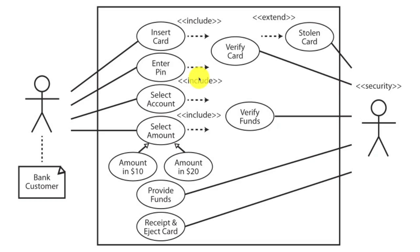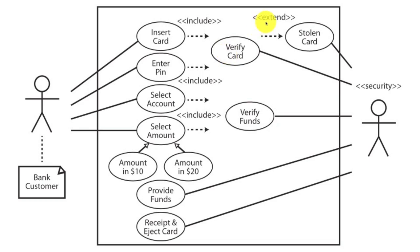Right here you can see the word 'include.' You use include whenever you want two or more elements to use a use case. For example, when they insert their card we verify the card, and also when they enter their PIN we verify the card — so this is a use case shared by both, hence we say these include verification of the card. 'Extend,' on the other hand, is used whenever a use case is optional. For example, if we verify the card and decide it is not a good card, we can extend to mark it as stolen. However, we are not required to do that — it's extended functionality that is not needed, hence it says extend instead of include.